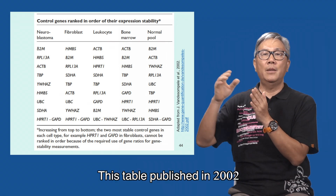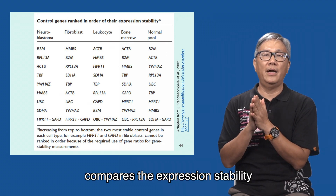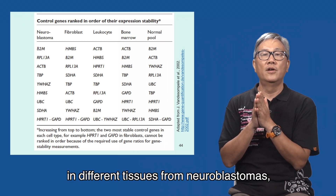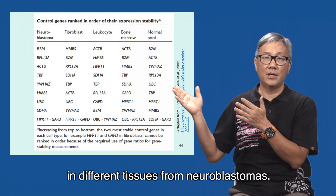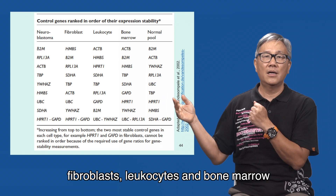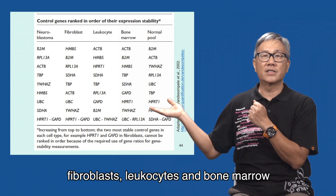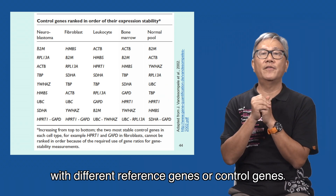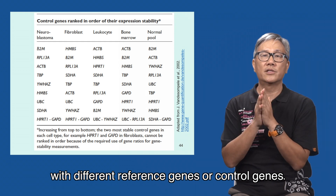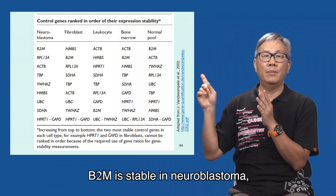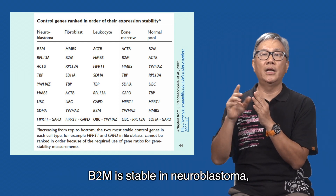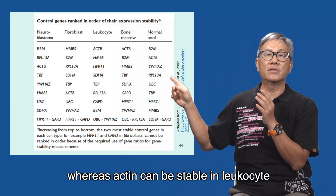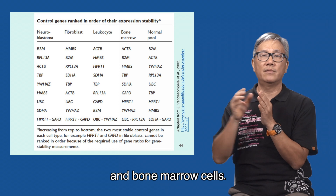This table published in 2002 compares the expression stability in different tissues from neuroblastoma, fibroblast, leukocytes, and bone marrow with different reference genes or control genes. B2M is stable in neuroblastoma, whereas actin can be stable in leukocytes and bone marrow cells.